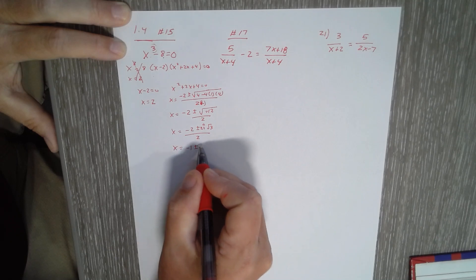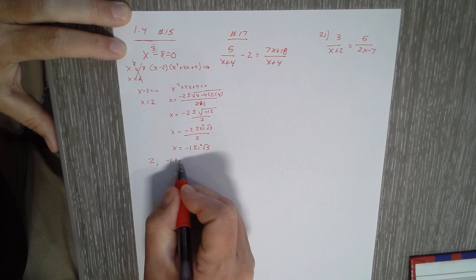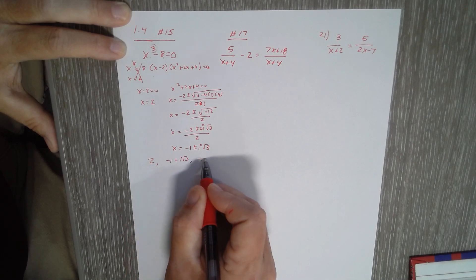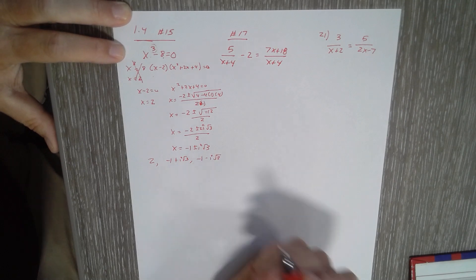So my solutions are 2, negative 1 plus i square root of 3, and negative 1 minus i square root of 3.